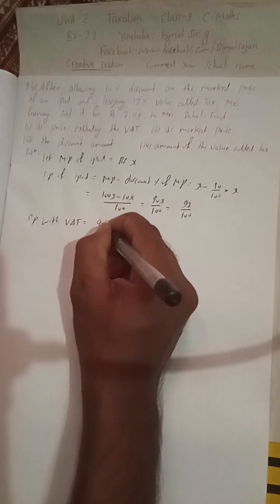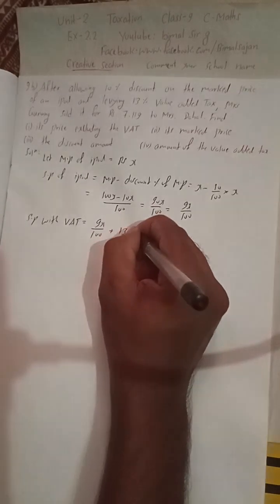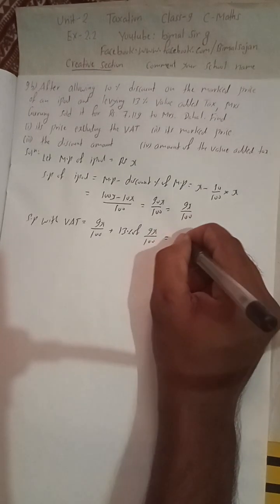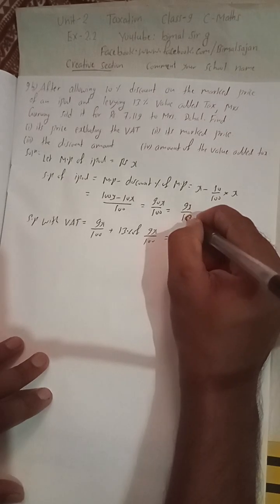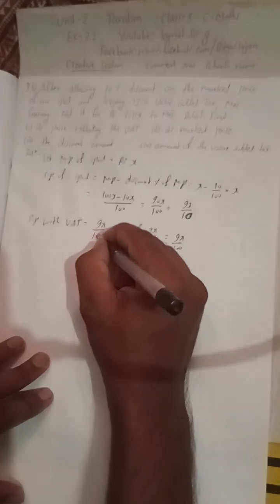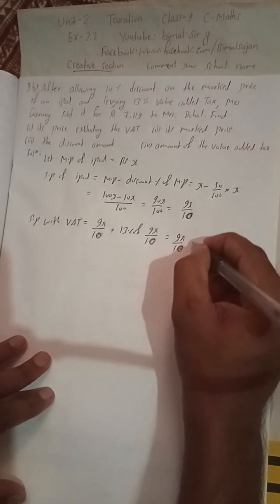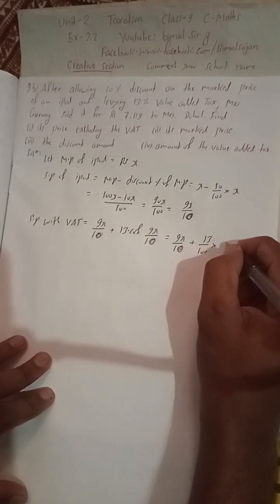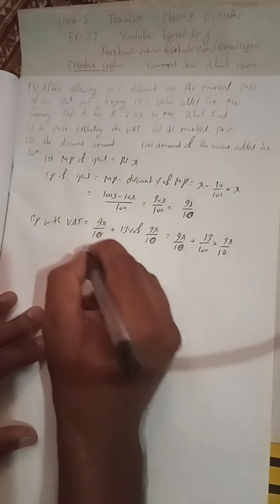The VAT rate is 13 percent, so this is 9x by 10 plus 13 percent of 9x by 10. That's 9x by 10 plus 13 divided by 100 times 9x by 10.